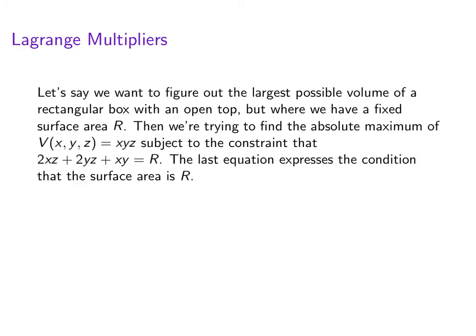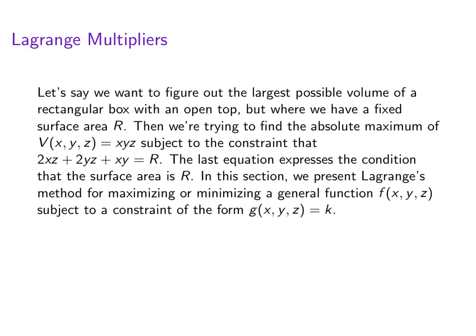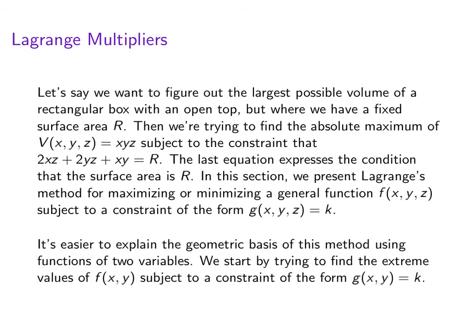So this last equation expresses a condition that the surface area is R. So what we'll be presenting is something called Lagrange's method for maximizing or minimizing a general function f(x,y,z) subject to some constraint of the form g(x,y,z) = k. Now it's easier to explain the geometric basis using two variables, but when we state the general method it's going to be with a function of three variables. You can use it with either one.